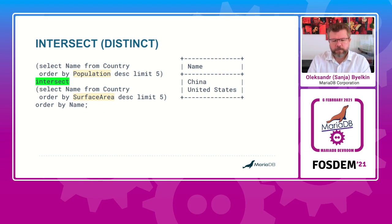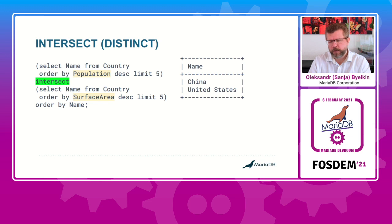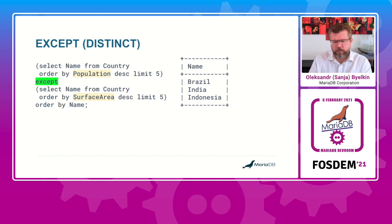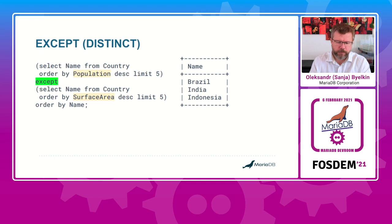What about the duplicates? We can easily find them with an INTERSECT query, which returns countries that are in both lists. We can also find countries which are among the biggest by population but not among the biggest by surface area — you can do that with EXCEPT.